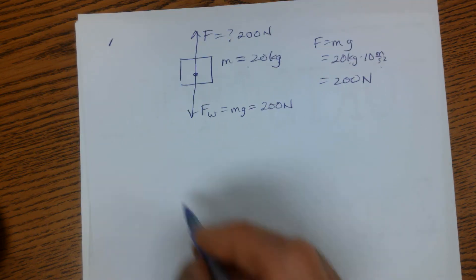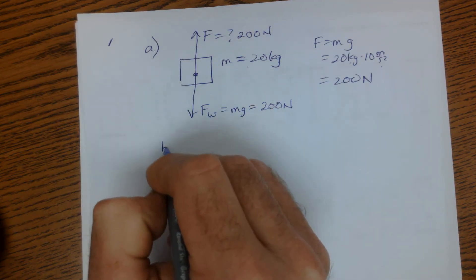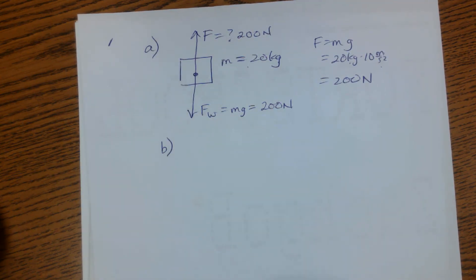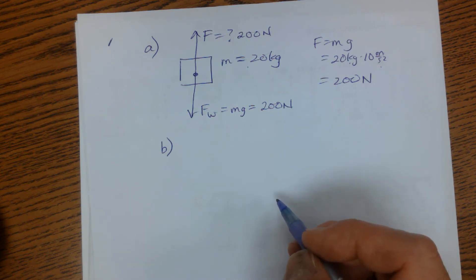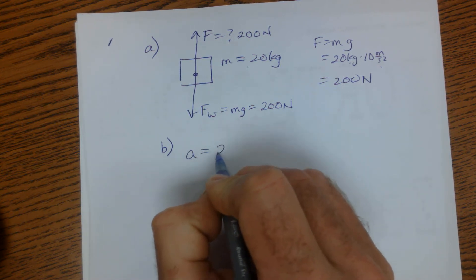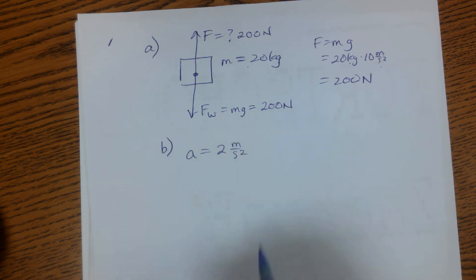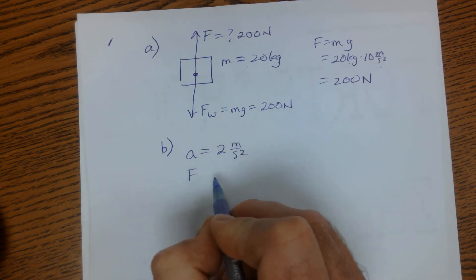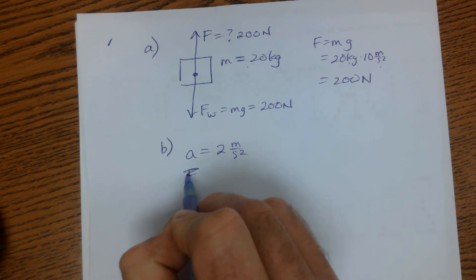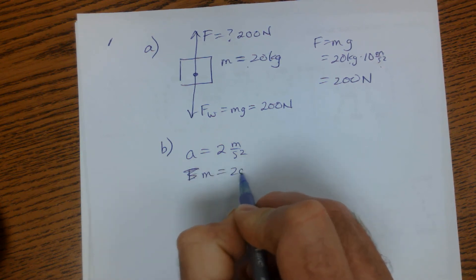So then on to part B. What about if we want to give it an upward acceleration of 2 meters per second squared? So now my acceleration is 2 meters per second squared. I know the mass of that object is 20 kilograms.